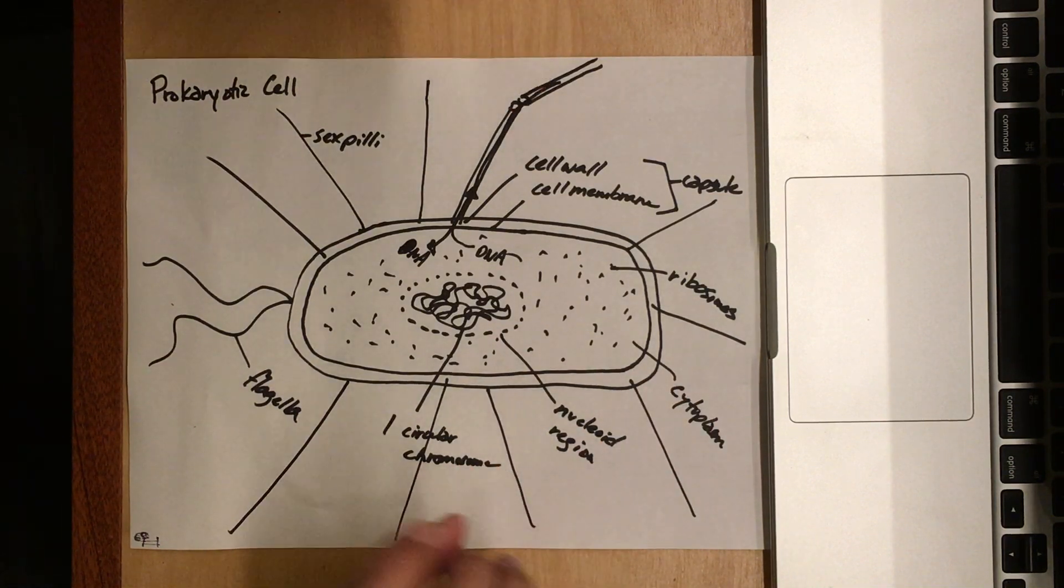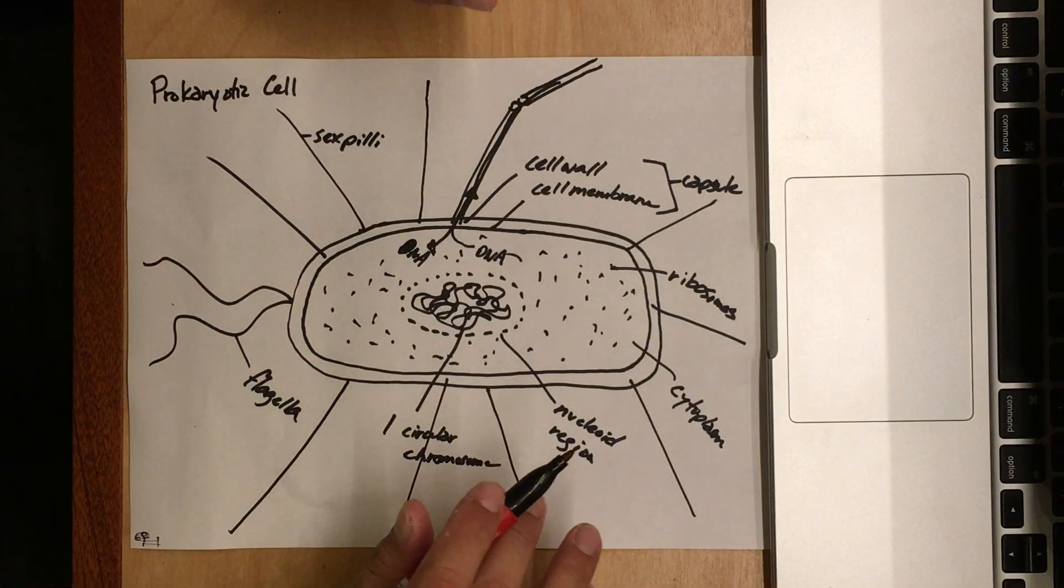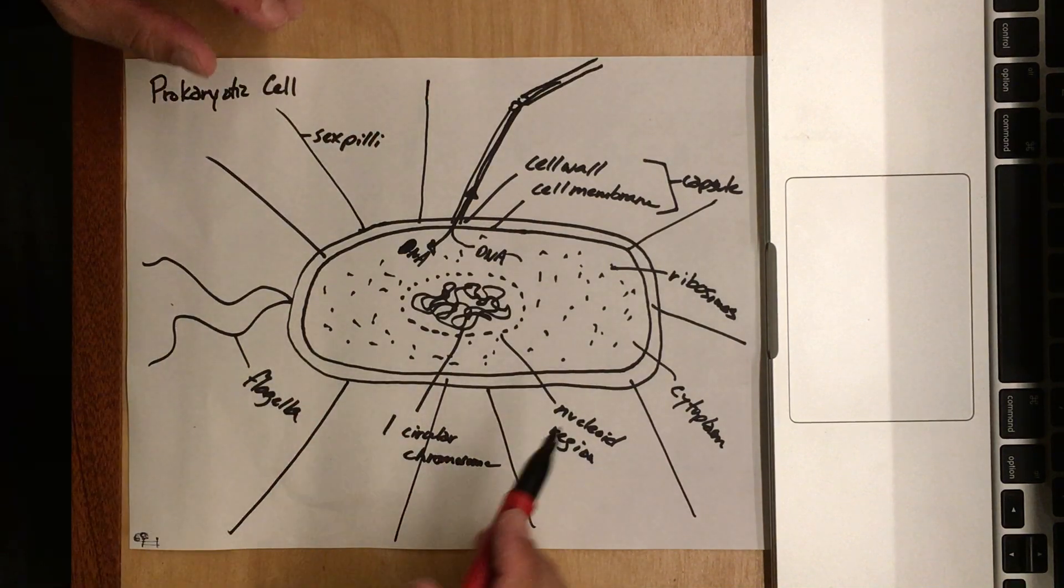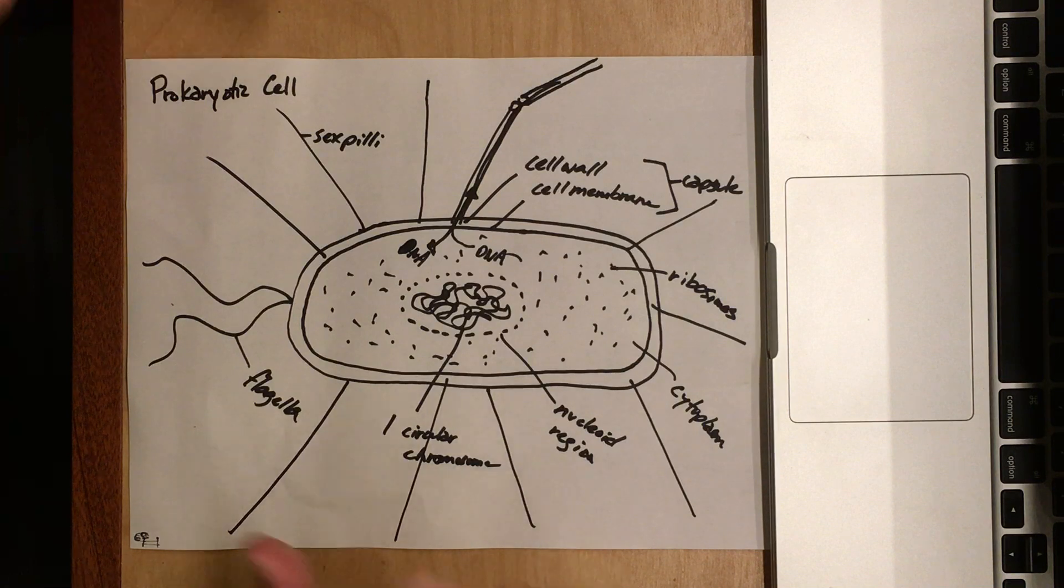These sex pili are just sticking out, hoping that one day they bump into another bacterial cell. They may never do that, but that's what they're there for. That's the last part we'll draw. We've got flagella and sex pili on the outside that help with locomotion and contact with other cells.